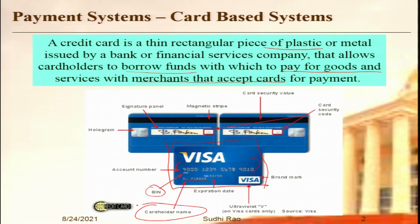The card has the name of the card holder, and an expiration date. For a card to be valid, it must be within the expiration period. Card companies typically renew the card once the expiration period is over. There is also a bit of marketing of the card network — Visa or Mastercard. Some cards may have a holographic image. In one category of the most advanced cards today, called smart cards, there is also an electronic chip embedded.